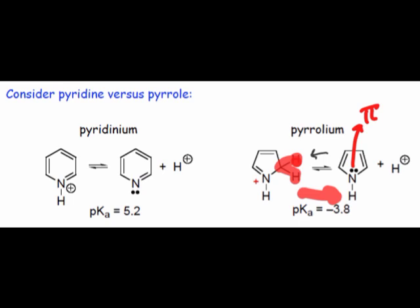For this reason, we should expect pyrrole to be a very weak base and its conjugate acid to be very strong.